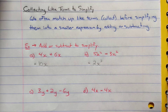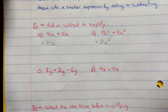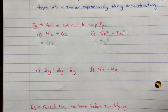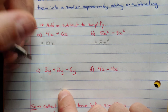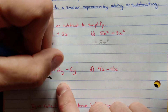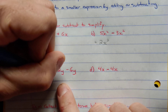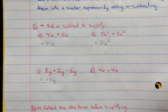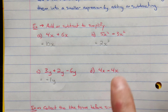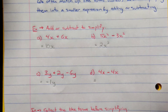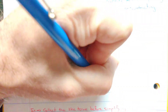3y plus 2y minus 6y — the y's are the same, so these are all lines. We have 3 lines plus 2 lines giving 5 lines, then taking away 6 lines leaves us short 1 line — negative 1y. In the next case: 4x minus 4x. We take away 4 lines from 4 lines and we're left with nothing — zero.